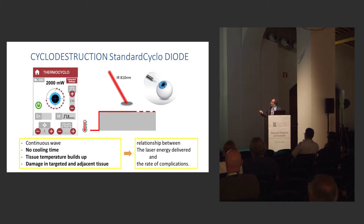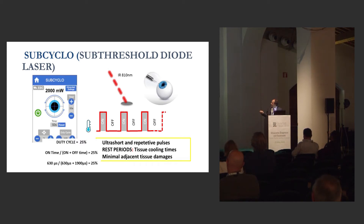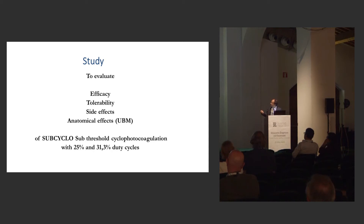It's now possible to use the subthreshold diode laser to avoid that — using only very short and repetitive pulses with a rest period. During this rest period, tissue cooling time prevents adjacent tissue damage. We can calculate what we call the duty cycle: the ratio of the 'on' period to the total period (on plus off). You can use a duty cycle of 25%, or a slightly higher one at 31.5%. In my department, we evaluated the efficacy, tolerability, and side effects of both procedures.